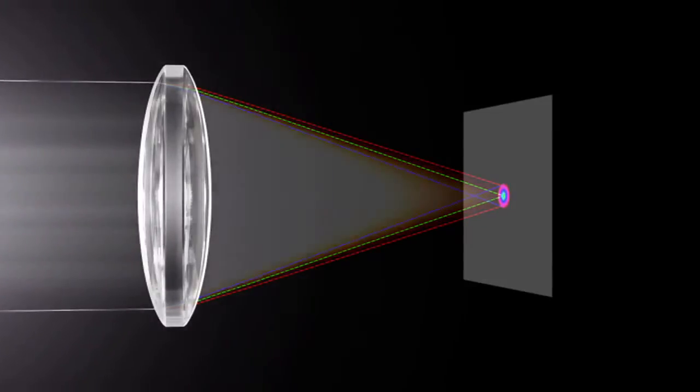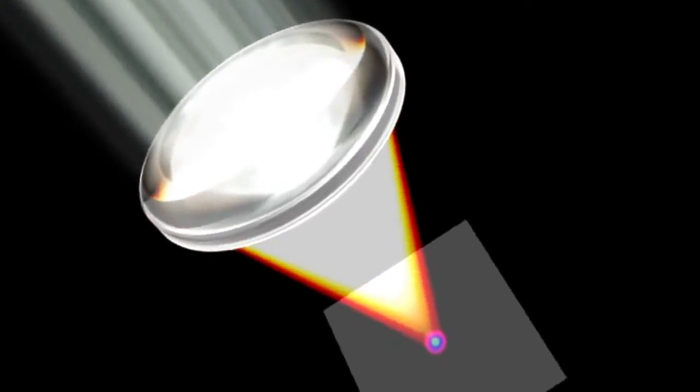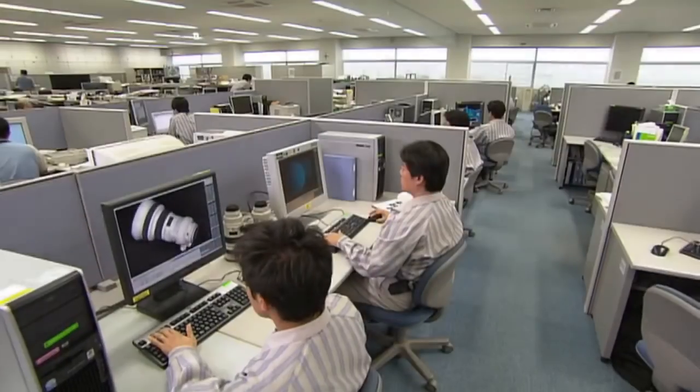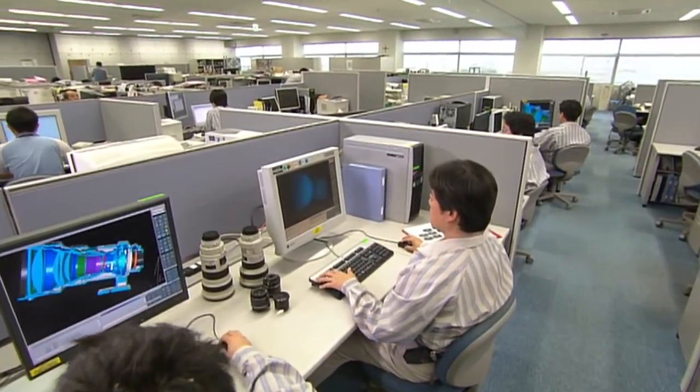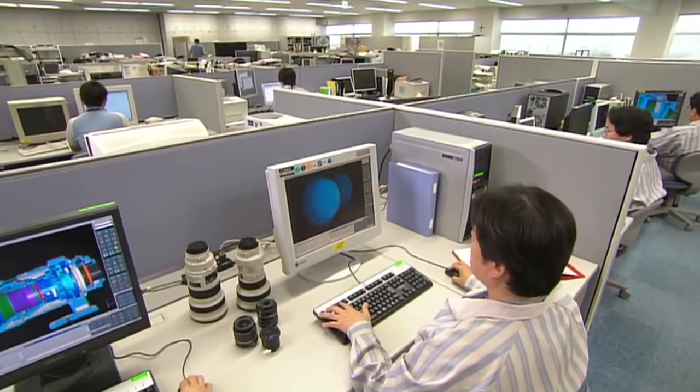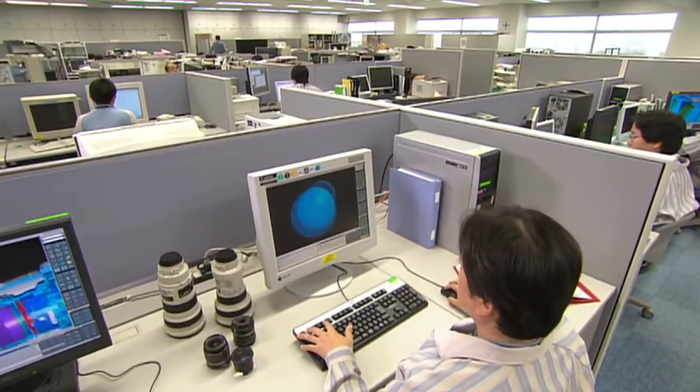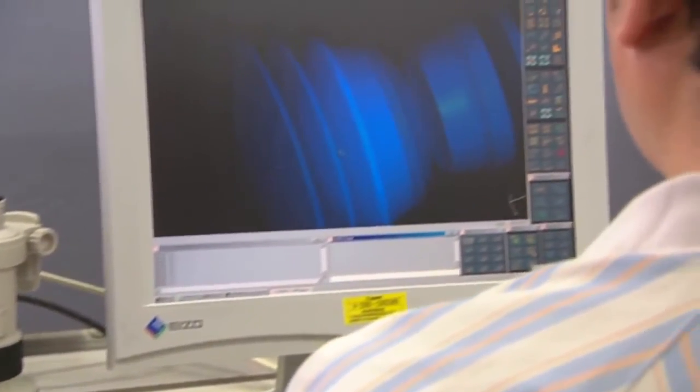As such, a number of difficult problems arise when spherical lenses are used as camera lenses. Canon's ideal lens is one that projects focus points as true points, free of blurred images, distortion, and color bleeding. To achieve this goal, Canon has been working to solve the problem of aberrations.